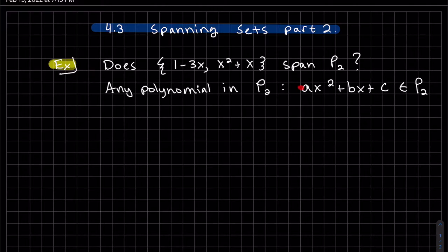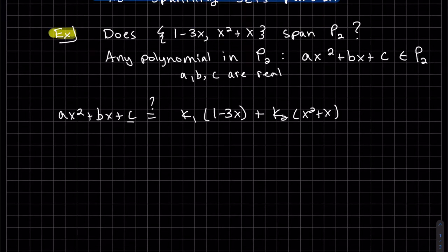So this is representing all polynomials in P2, where a, b, and c are real. Can this polynomial be written as—I'm going to use k1—can we find k1 and k2 that represents all polynomials?